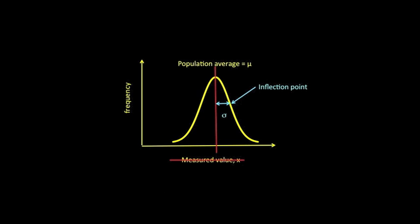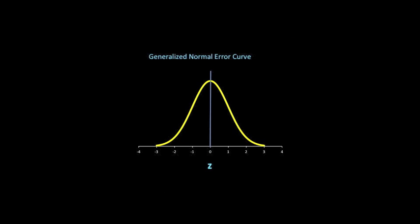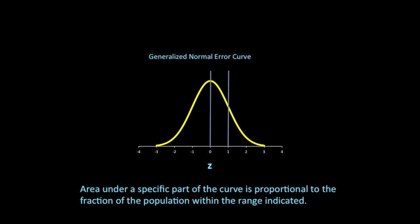Indeed, Gauss demonstrated that this curve can be generated from an exponential function of z squared. So we can make generalizations about this curve centered about the mean situated at zero. The curve is symmetric, and half the population lies to the right, and half of the population lies to the left. The area under the curve in a particular region is proportional to the fraction of the population that lies there.